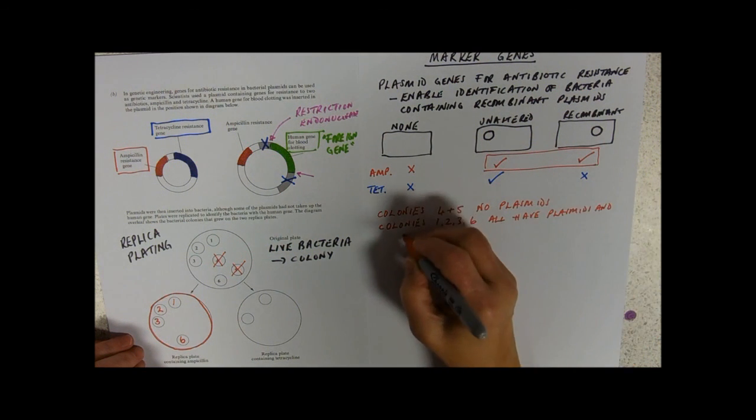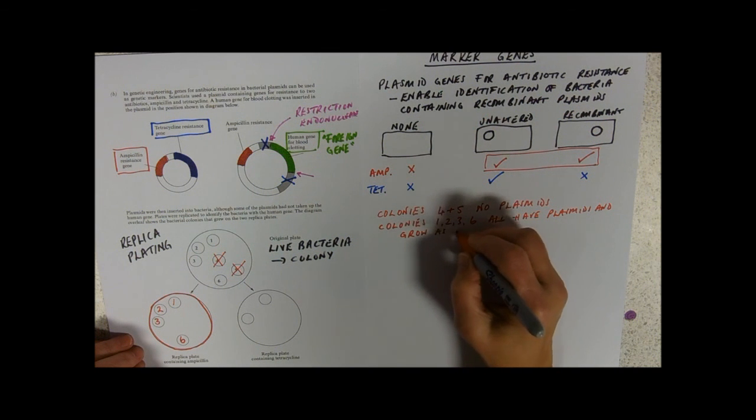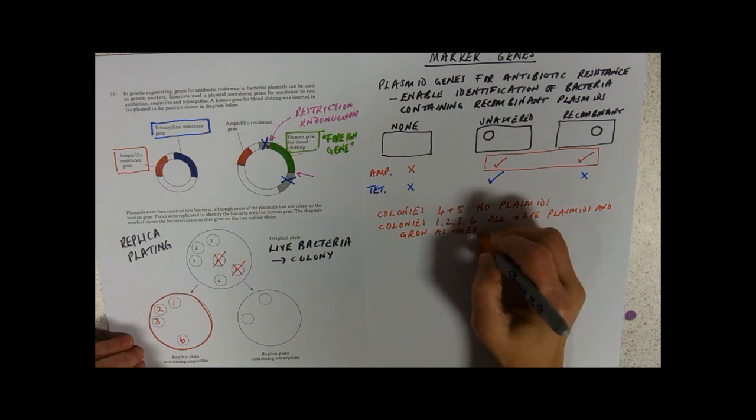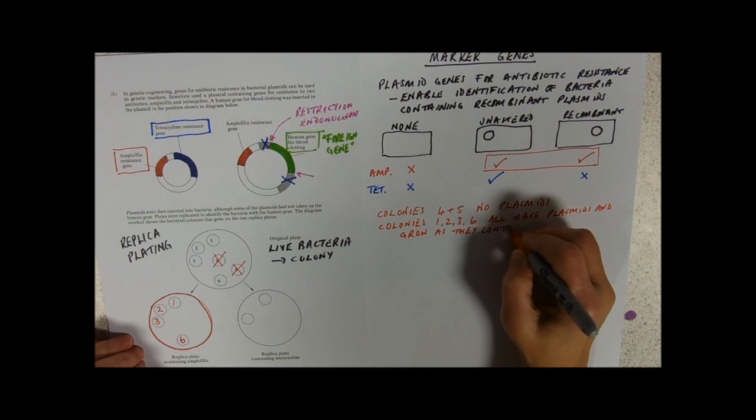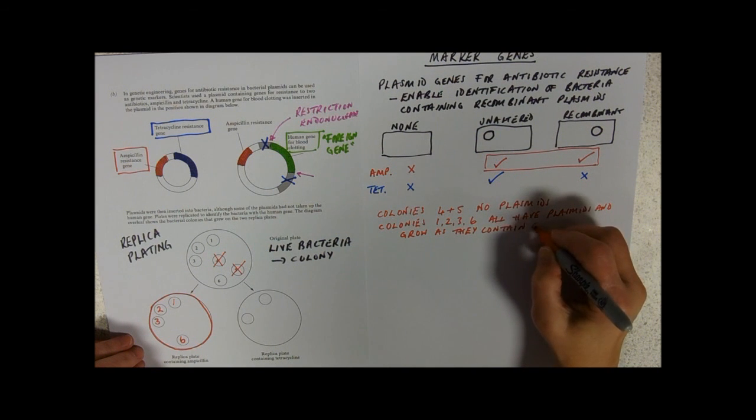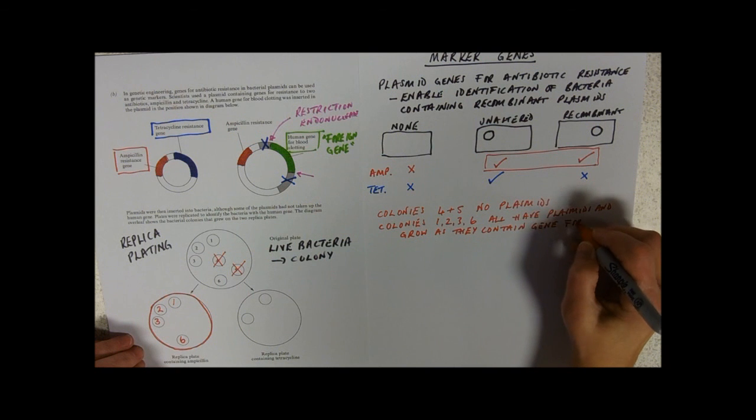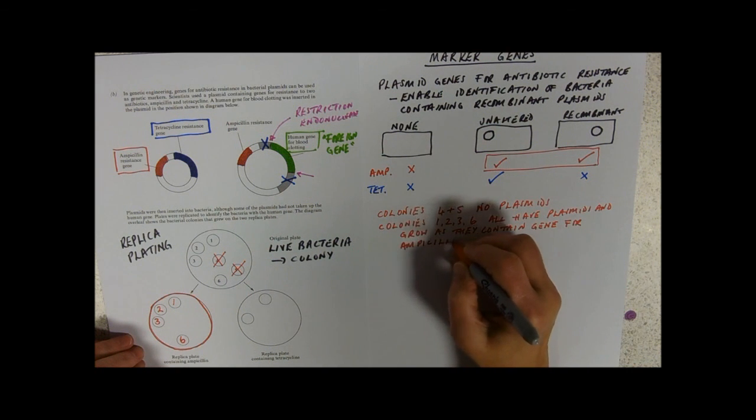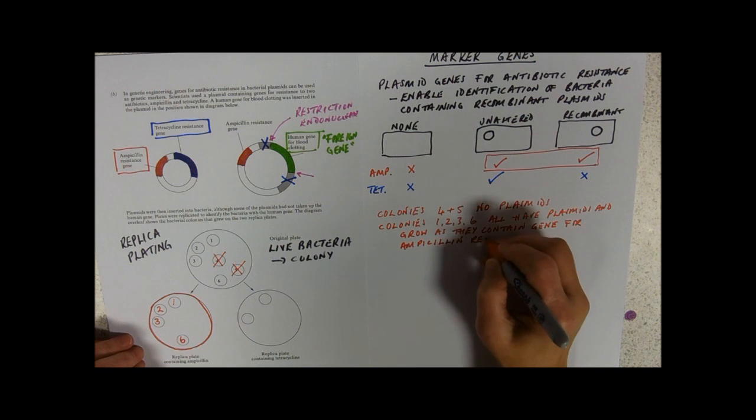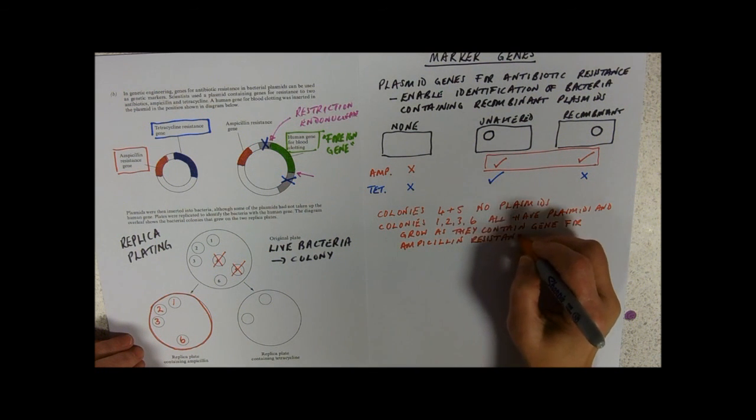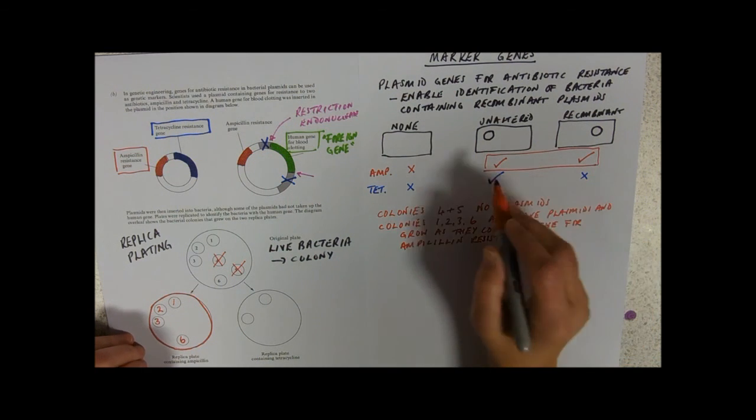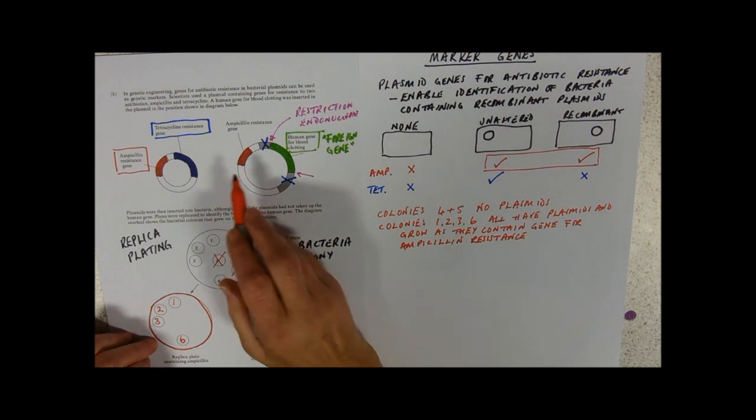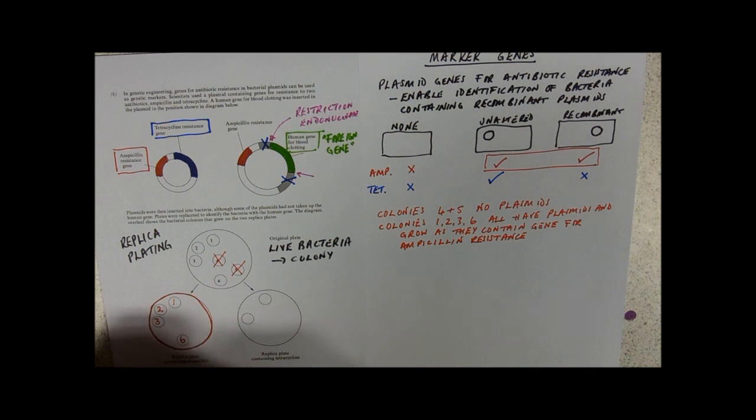And colonies one, two, three, and six all have plasmids and grow as they contain the gene for ampicillin resistance. But we don't know whether they're unaltered plasmids or altered plasmids. All we can say is, yep, they've got a plasmid.